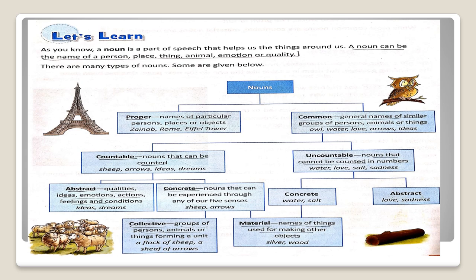Abstract nouns. Qualities, ideas, emotions, actions, feelings and conscience. For example, Ideas and Dreams.